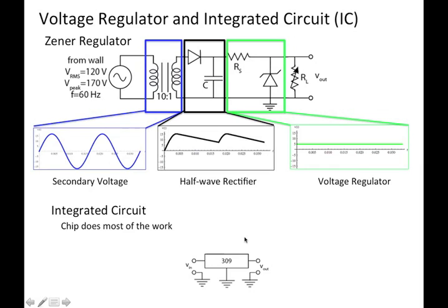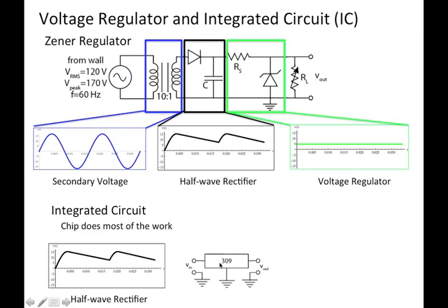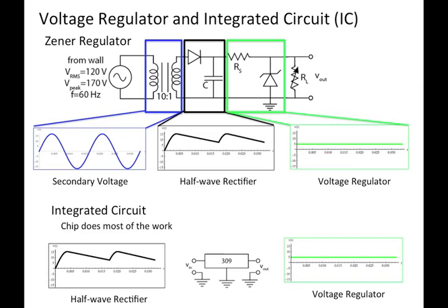The other way to do that is with an integrated chip. So the chip does most of the work. We just go buy some chip. We input some half-wave rectified signal. And on the output, we get some constant five volts. So that's typically how you'll do it in general. But we've kind of stepped our way to a reasonable power supply.